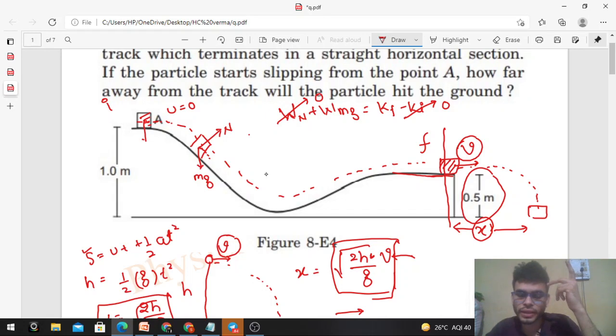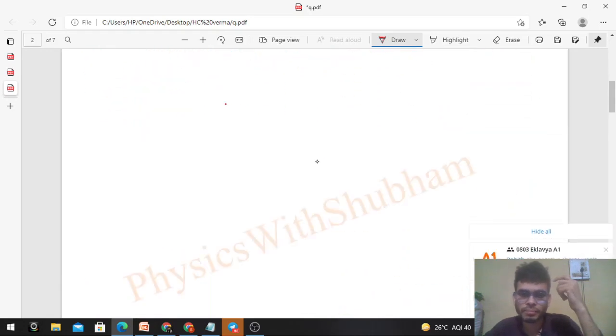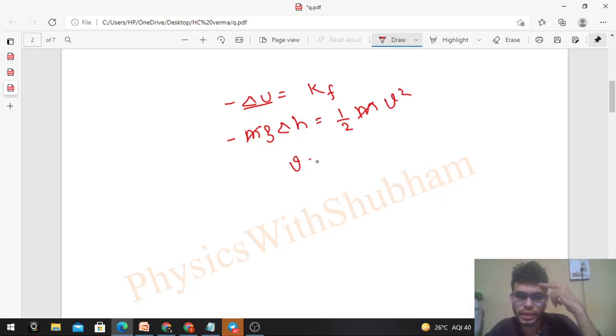Work done by mg can be taken as negative of the change in gravitational potential energy. So -Δu equals final kinetic energy. -mg Δh = ½mv². m cancels out. From this you can get v = √(2g Δh).